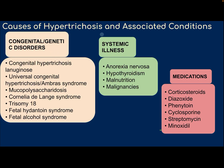Causes of hypertrichosis include congenital genetic disorders such as congenital hypertrichosis, hypertrichosis lanuginosa, universal congenital hypertrichosis, Ambras syndrome, mucopolysaccharidosis, Cornelia de Lange syndrome, trisomy 18, fetal hydantoin syndrome, and fetal alcohol syndrome. Systemic illnesses include anorexia nervosa, hypothyroidism, malnutrition, and malignancy. Medications include steroids, diazoxide, phenytoin, cyclosporine, streptomycin, and minoxidil.